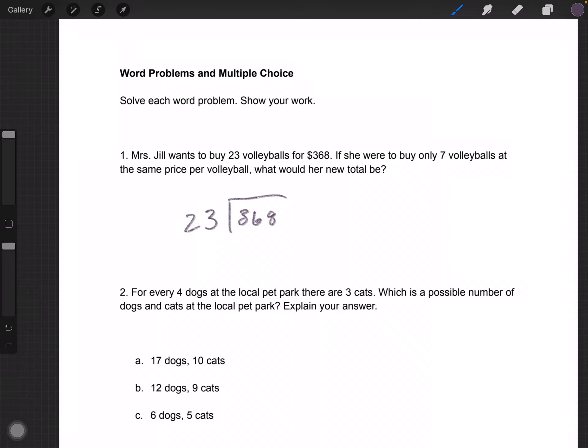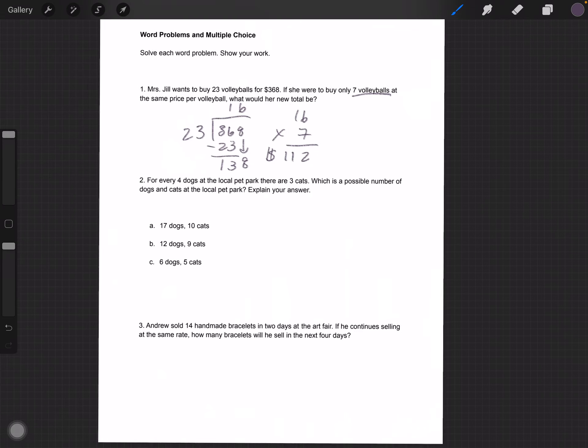So, 23 volleyballs for $368. We want to find out what the price is for one volleyball. So we obviously have to divide. How many times does 23 go into 36, which is 1? And we're left with 138. How many times does 23 go into 138? Six times exactly. So each volleyball is $16. Now, if she only wanted to buy 7 and each one is 16, then 7 times 16 is equal to $112.